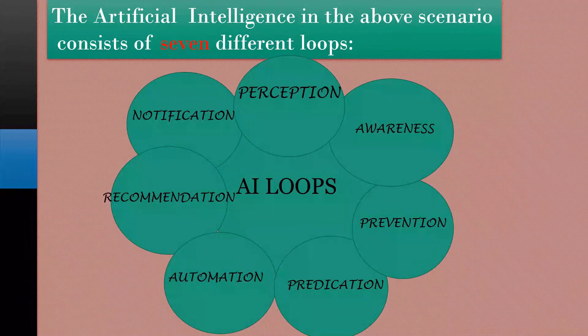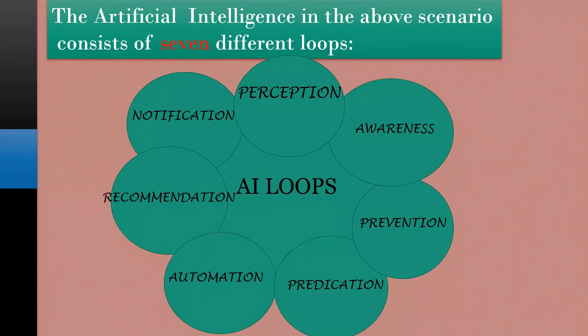Artificial intelligence in the above scenario consists of 7 different loops: Perception, Notification, Recommendation, Automation, Prediction, Prevention, and Awareness.